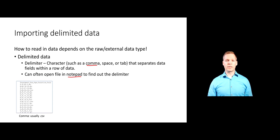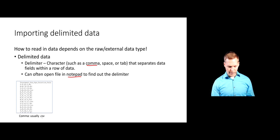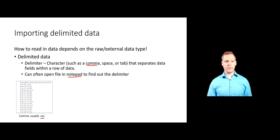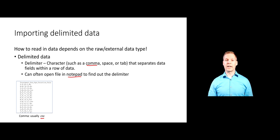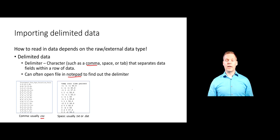Some common delimiters you might see: a comma-delimited file is typically called a comma separated value file — a CSV. The raw data elements in the data set are separated by commas. Here is an example of a space-delimited file, where in between every data entry there is a space, making the space the delimiter of this file.